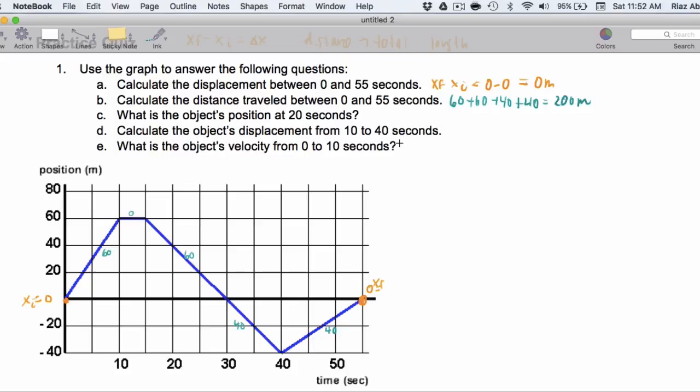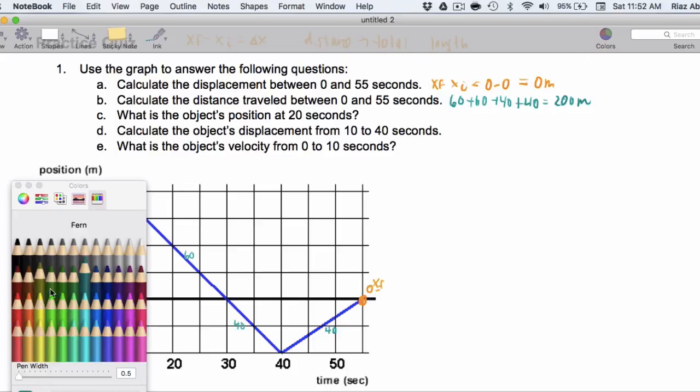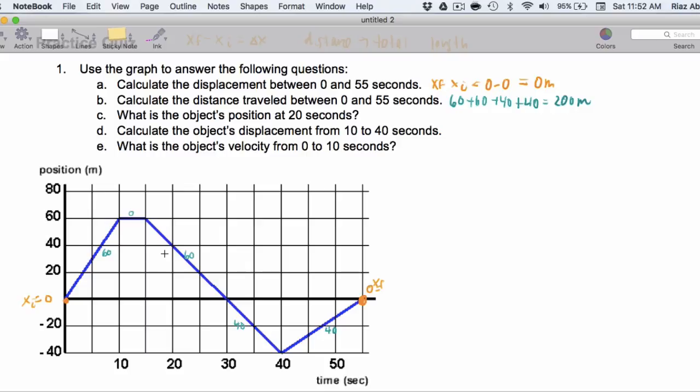Now, the object's position at 20 seconds. This is one of those questions that is designed to trick you, not because it's hard, but precisely because it's easy. You've done two very challenging questions. And then for 1C, what's the object's position at 20 seconds? You go to 20 seconds on the graph, and you simply read the position here as the 40 meter mark.